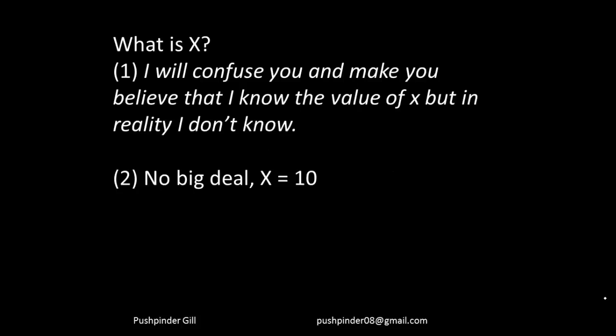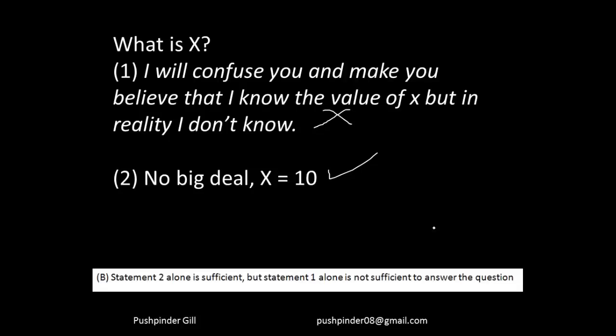Answer choice B means the same thing but reversed — the first statement will not be able to give you the answer alone. However, the second statement will give you the answer. That means statement 2 alone is sufficient, but statement 1 alone is not sufficient to answer the question.